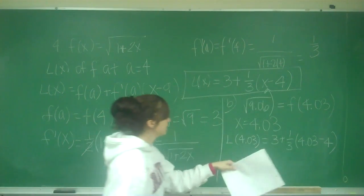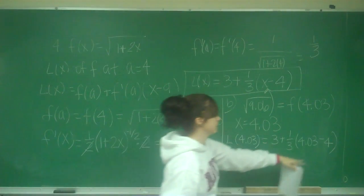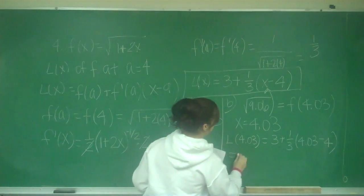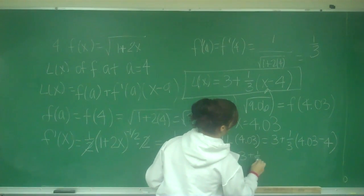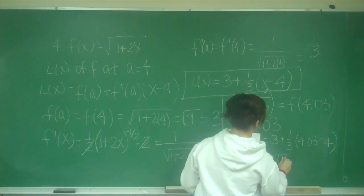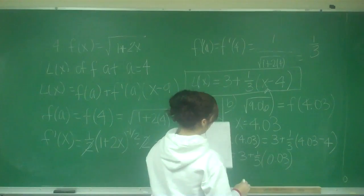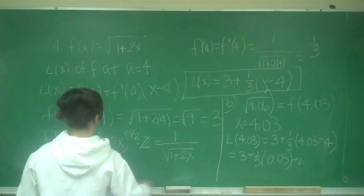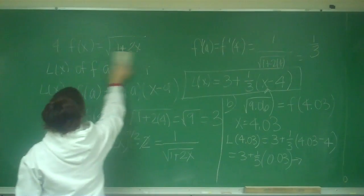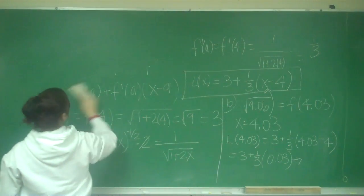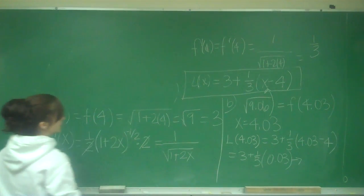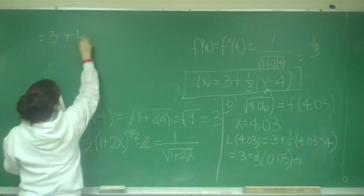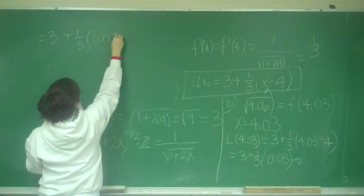This is why it becomes easier to leave it in this form because this is easier math to deal with. So this is equal to 3 plus 1/3 times 0.03. So this is going to be 3 plus 1/3 times 0.03.